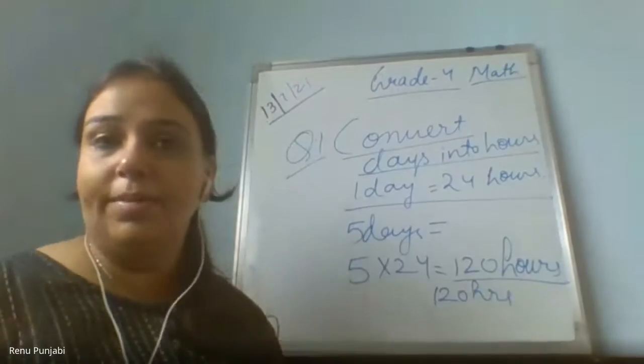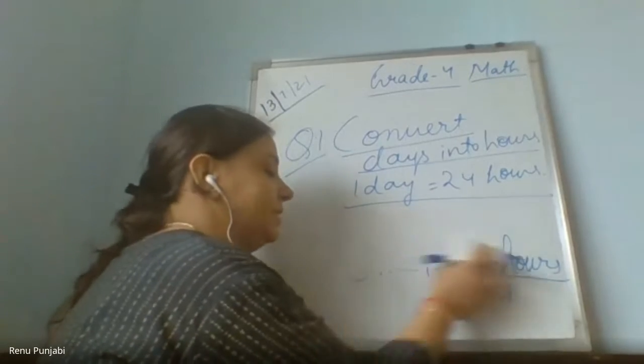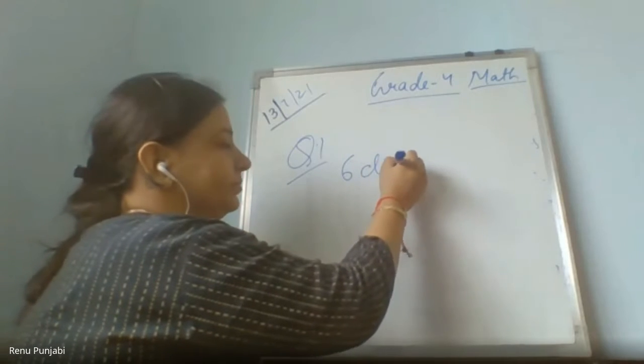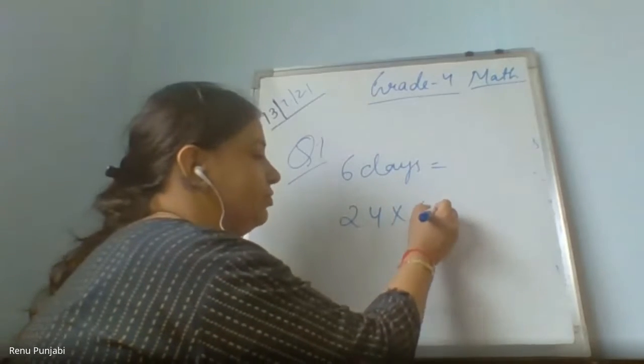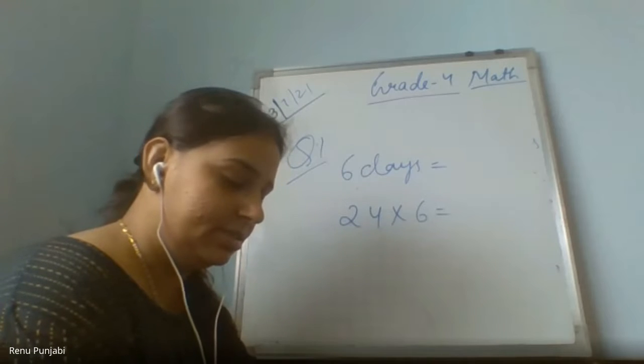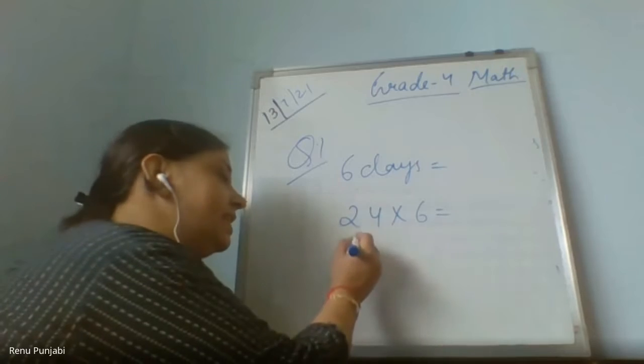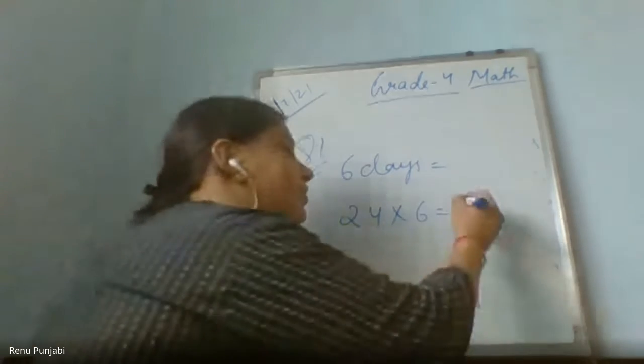If you only write 120, your answer will be wrong — 120 what? Days? Minutes? Seconds? It is compulsory to write the unit: 120 hours, or the short form 'hrs'. Laksha Dola, six days equals how many hours? 6 days and 24 hours in 1 day — so it is 144 hours.